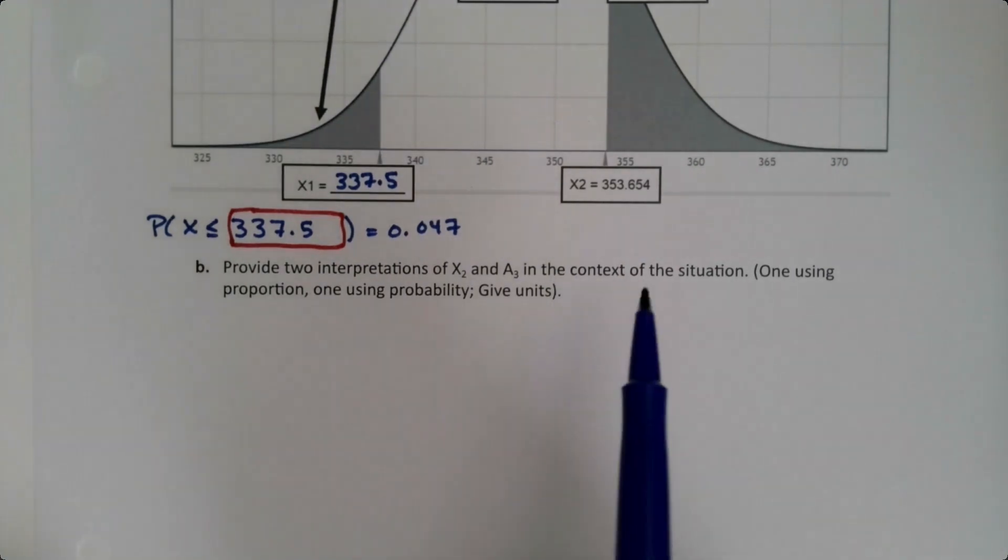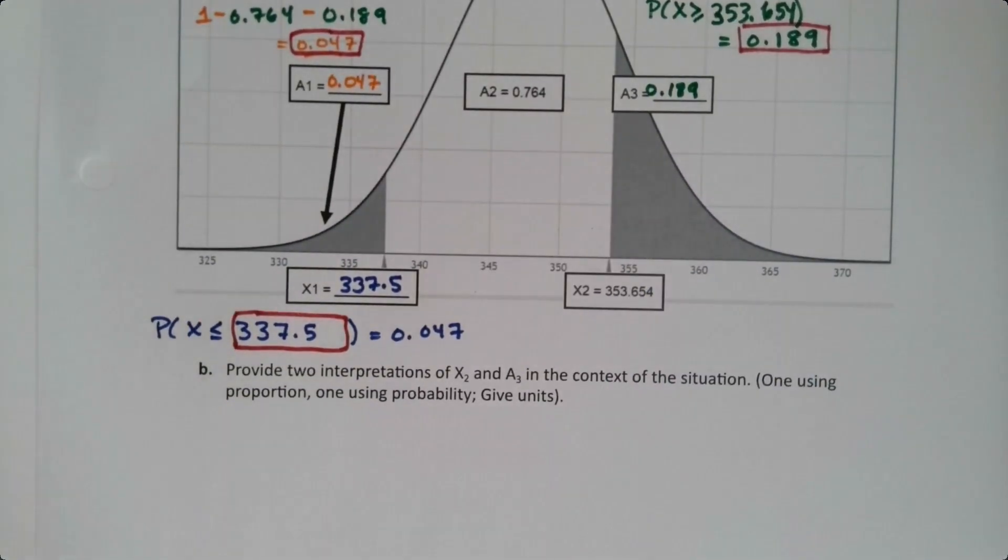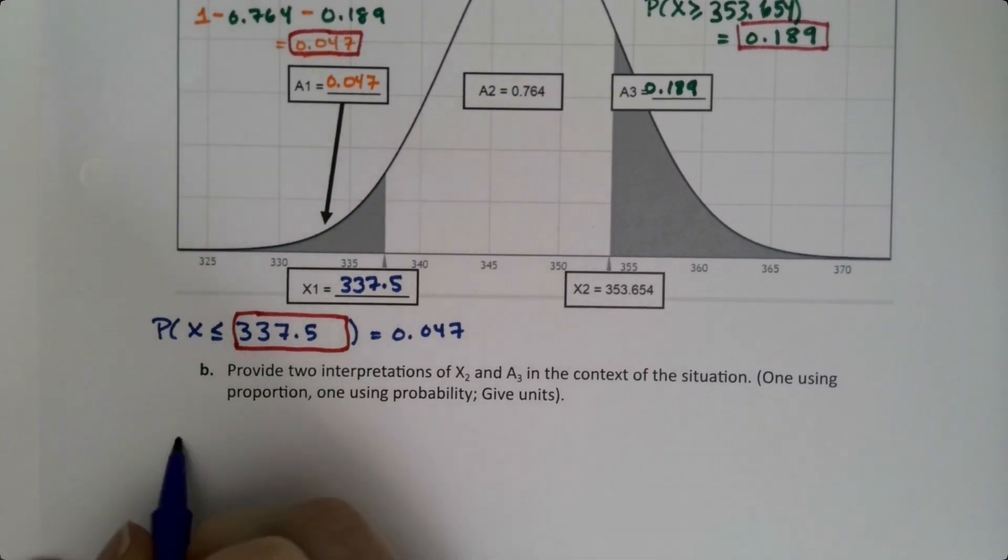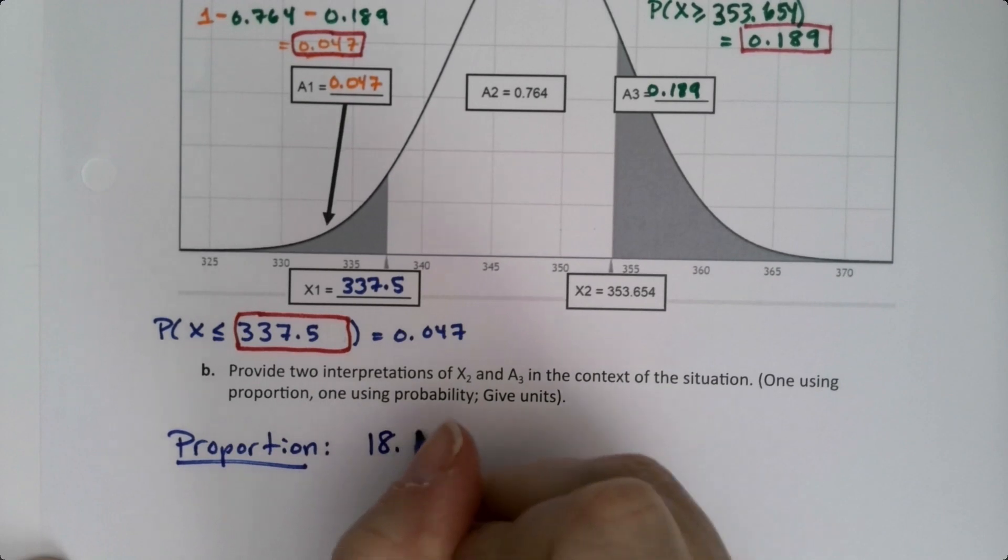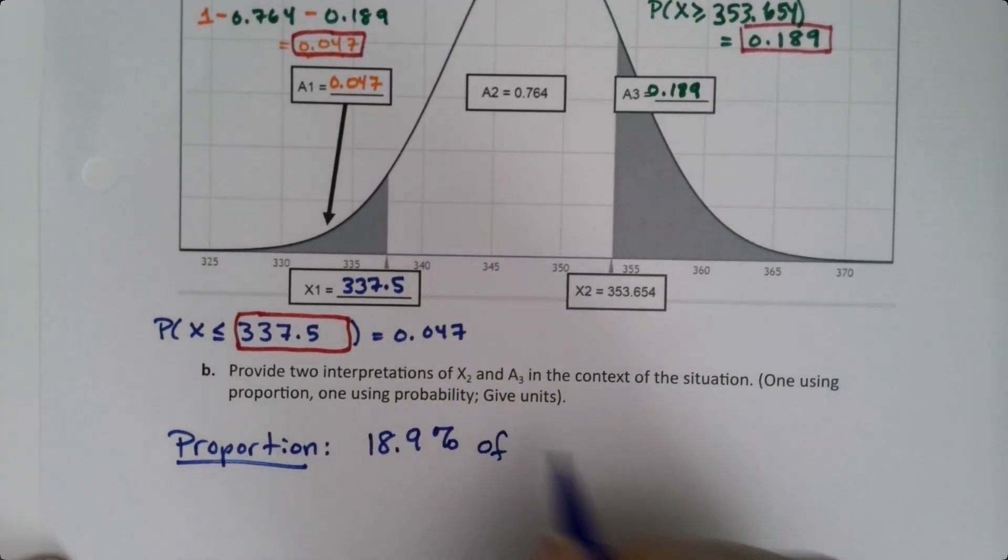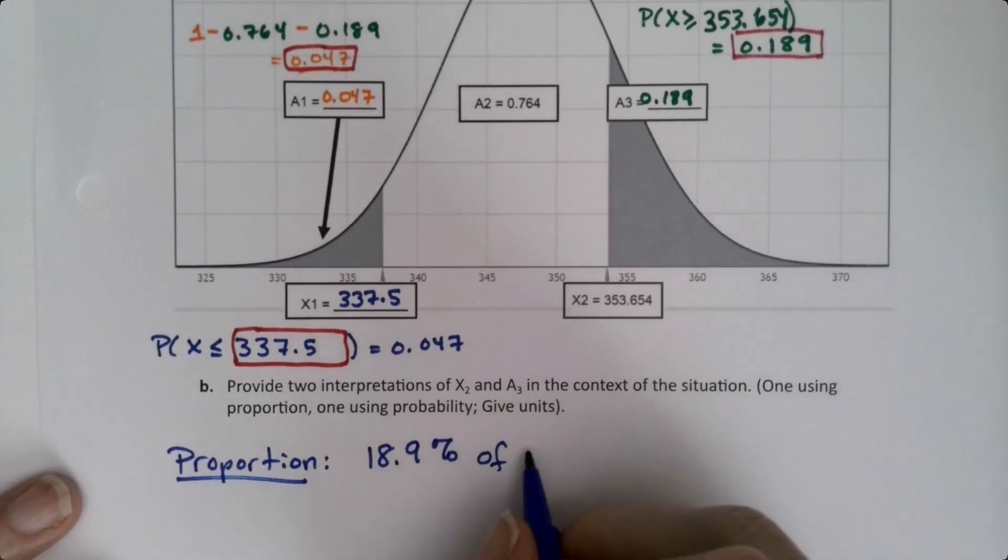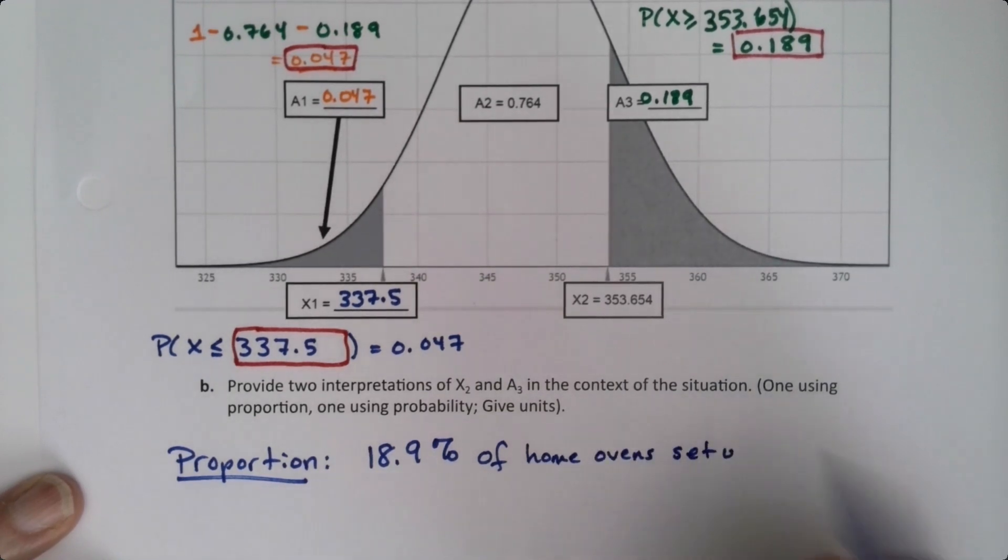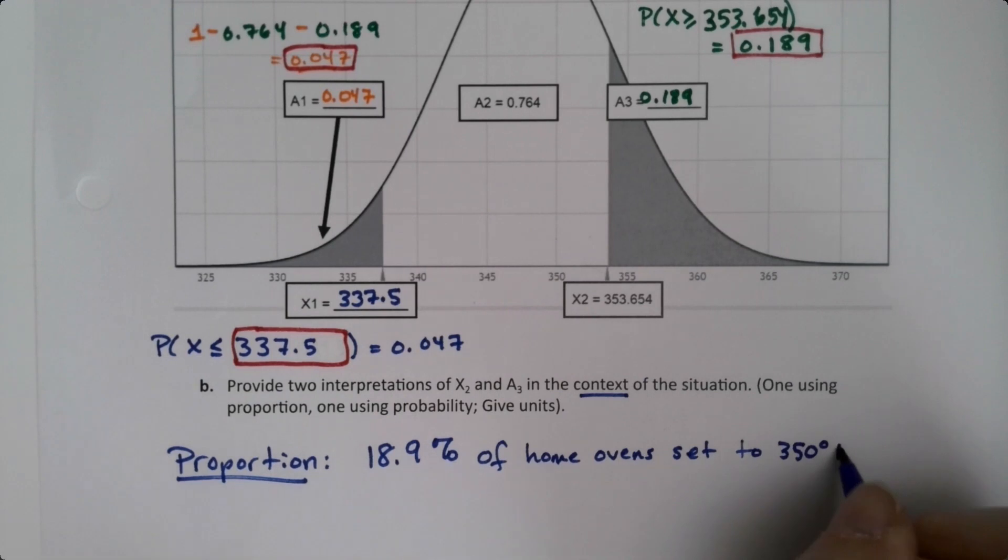Now provide two interpretations of X2 and A3, which is this bit over here, right? One using proportion, one using probability. Okay, so proportion—that's where we start off with a percentage. So we say 18.9% of home ovens set to 350 degrees.